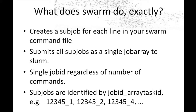What Swarm does is create a subjob for each line in your Swarm command file, then submits them as a single job array to the batch system, SLURM. You get one job ID regardless of the number of commands, and each subjob is identified by the underscore task ID — so they all have the same job ID but would be underscore 0, underscore 1, underscore 2, and so on.